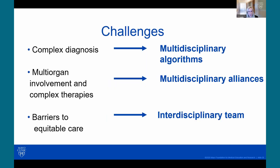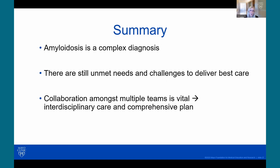Although there are many challenges facing our amyloid patients and interdisciplinary care teams, we can address them one by one: using multidisciplinary algorithms to address complex diagnosis, multidisciplinary alliances to address multi-organ involvement, and utilizing interdisciplinary care teams and comprehensive plans to address barriers to equitable care. In summary, amyloid is a complex diagnosis with unmet needs and challenges, but collaboration amongst multiple teams and subspecialists working together to provide interdisciplinary care and a comprehensive plan is always going to be very important.